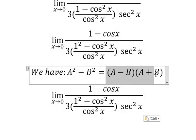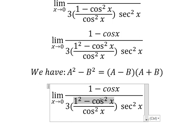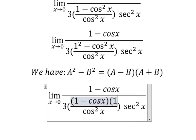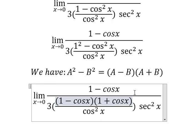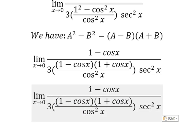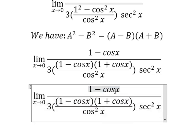Now we need to simplify by canceling (1 - cos x) from the numerator and denominator.